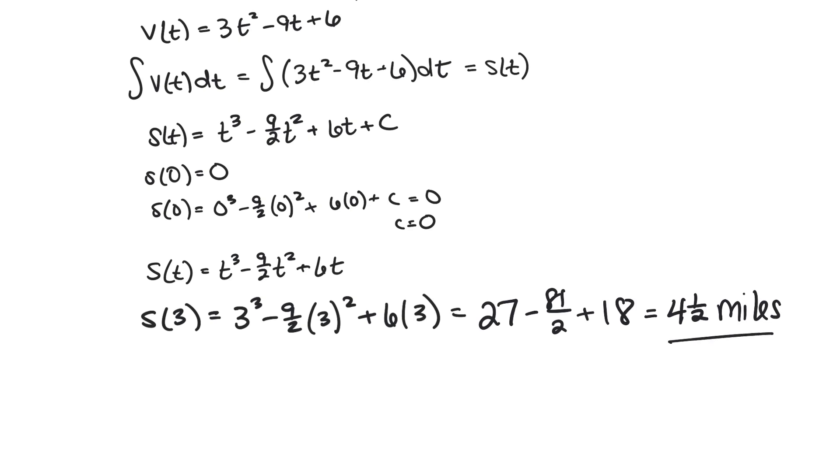So notice this was a much easier solution using the fact that we knew the antiderivative of velocity was position and then subtracting the positions. Because that's what we've done here. We're saying the displacement is the position at time 3 minus the position at time 0 which in our case would be 4 and a half minus 0.